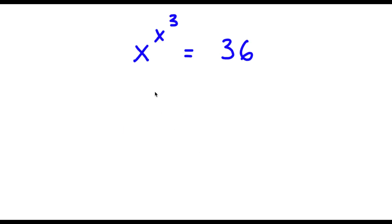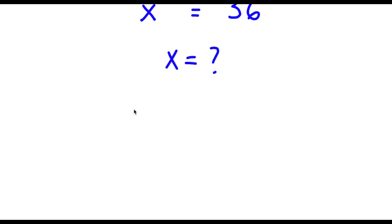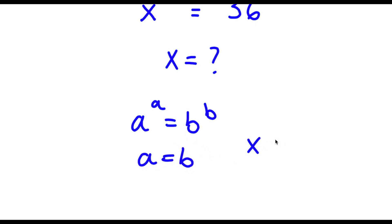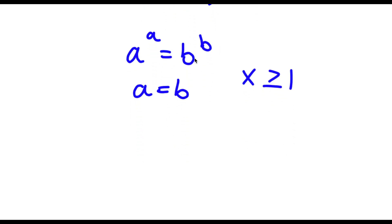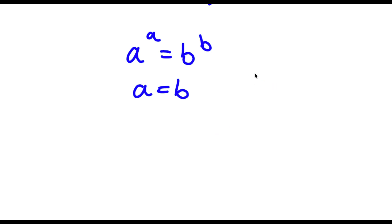Alright, so I have x to the power of x to the power of 3 is equal to 36. So right here, I want to find the value of x. Before solving this problem, I'm going to teach you guys an important property of exponents. If I have something in the form a to the power of a is equal to b to the power of b, then a is equal to b — but this is only if a is greater than or equal to 1. So if a was something like 0.4, this property wouldn't apply because a is not greater than or equal to 1.